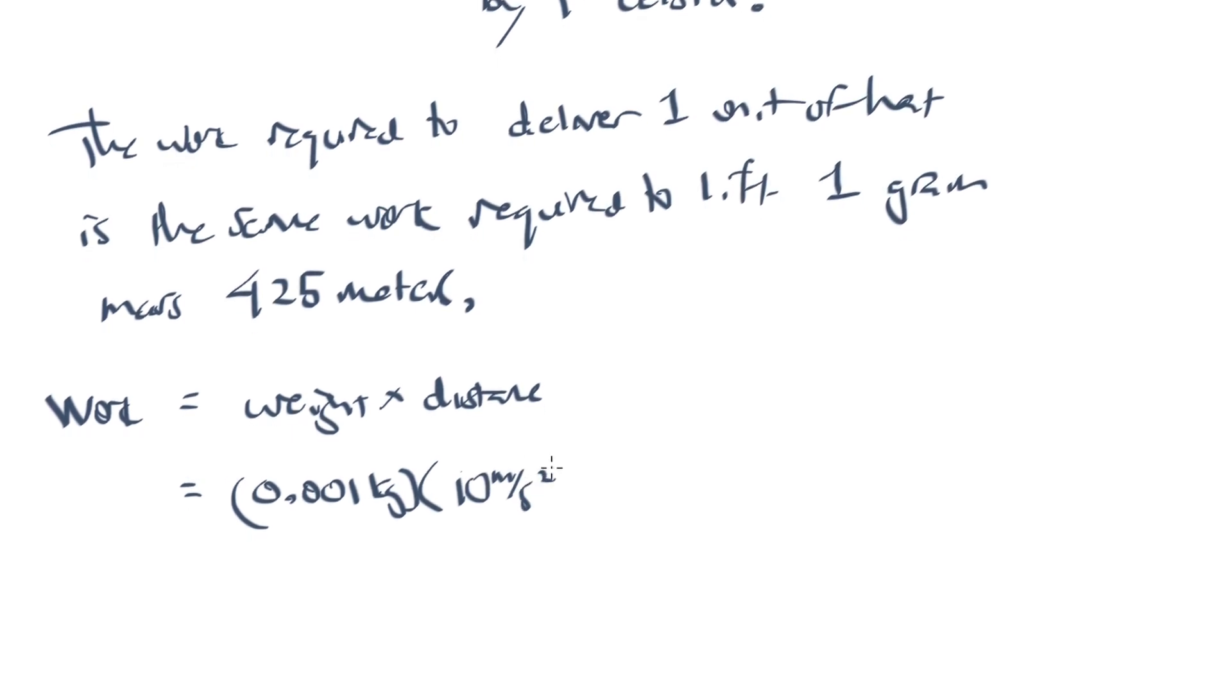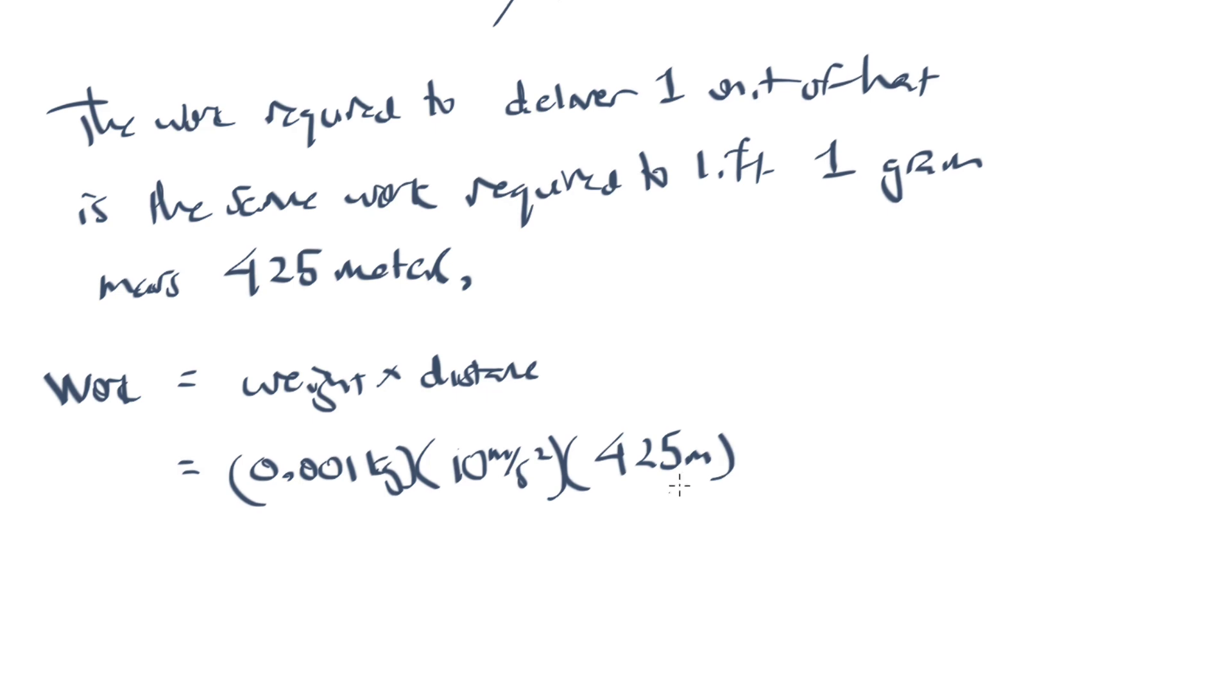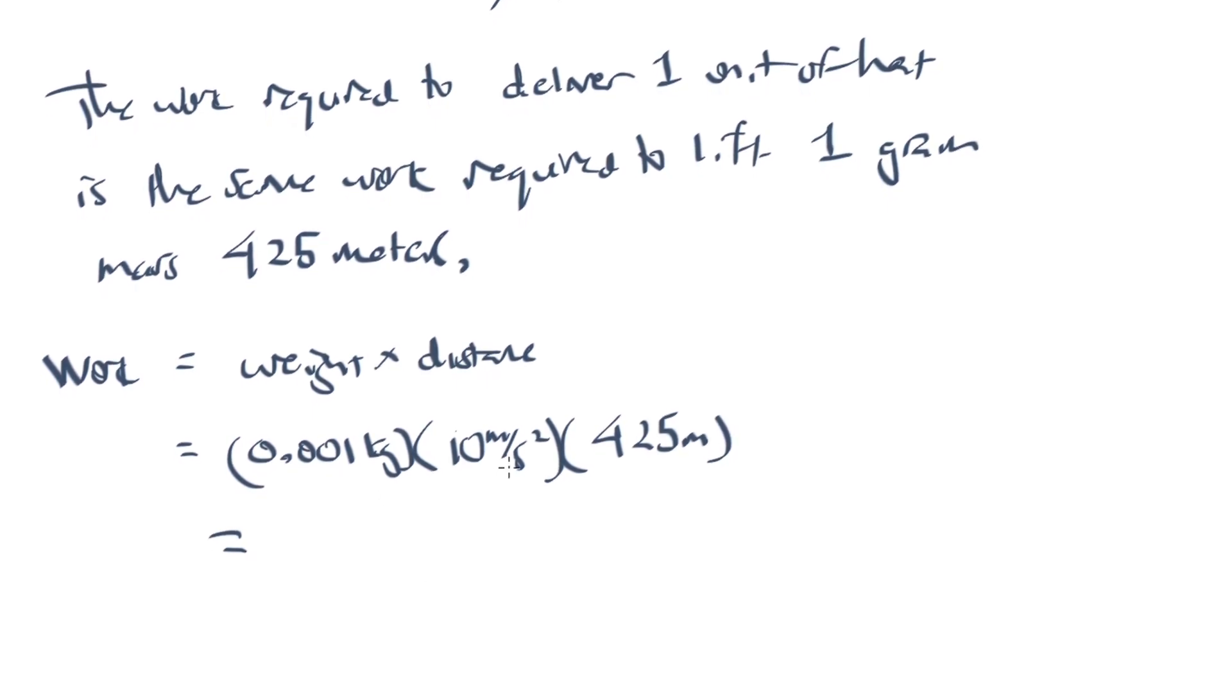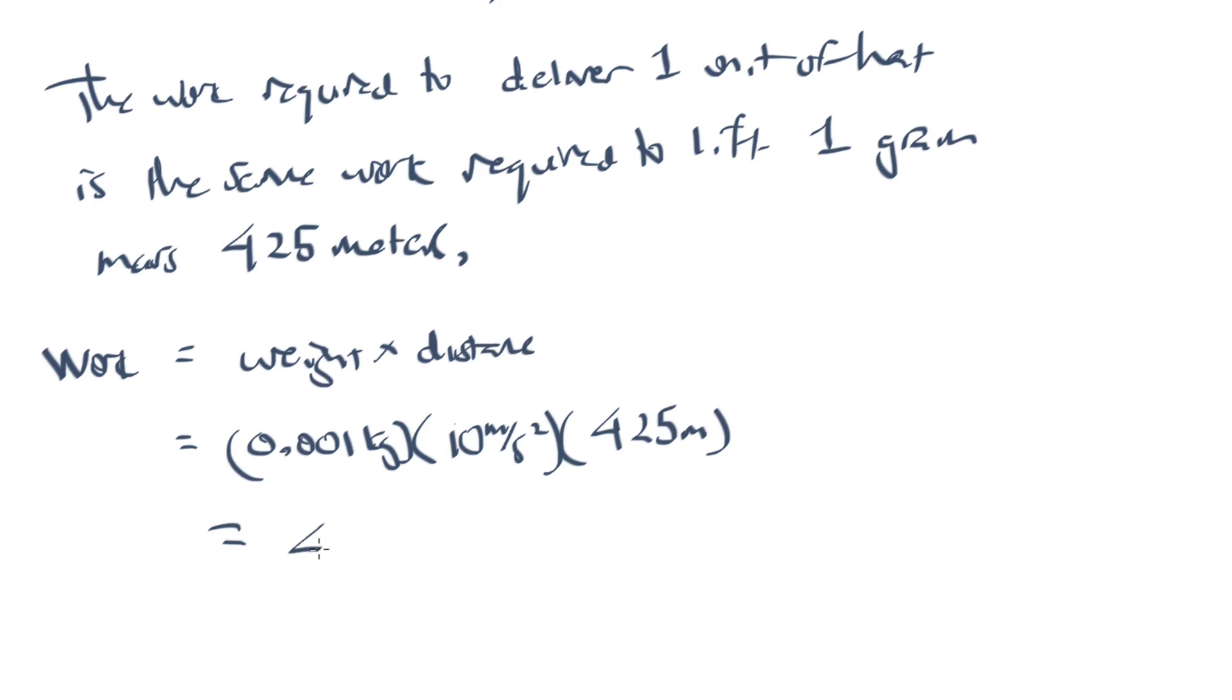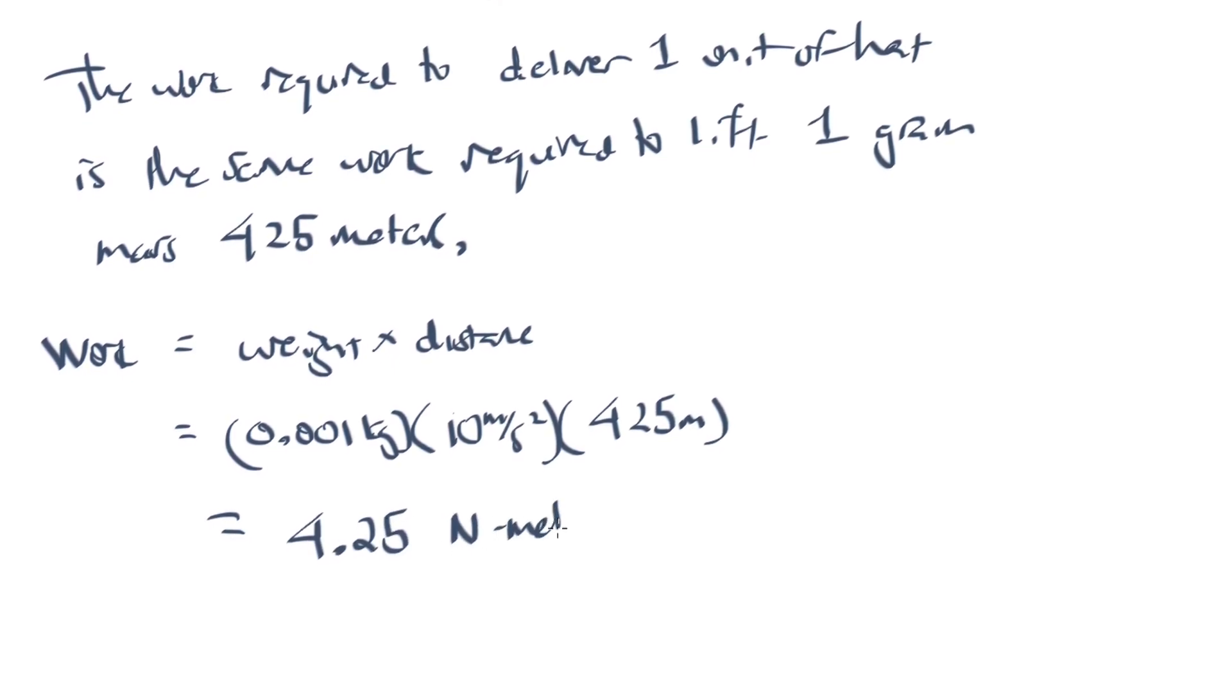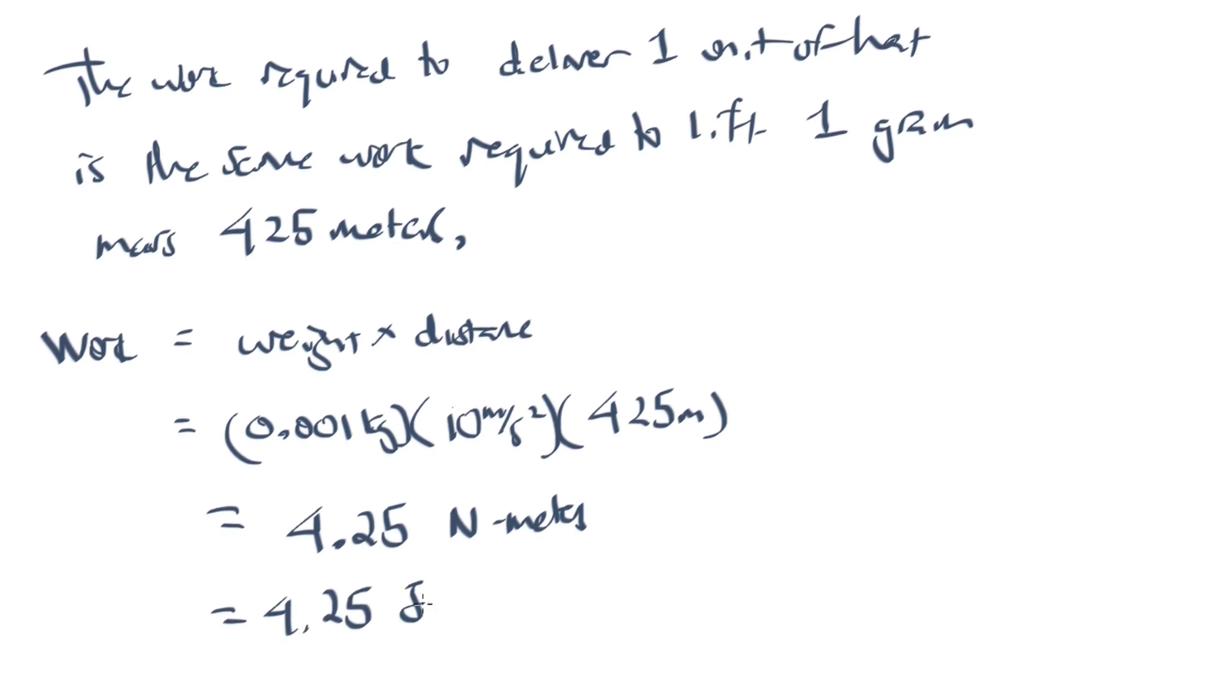I'm just going to round off to 10 meters per second squared, and I won't be too far off, and multiply that by 425 meters. And you'll see right away that, well, this becomes 0.001 times 10 times 425. That gives us 4.25 Newton meters. Or, 4.25 joules.